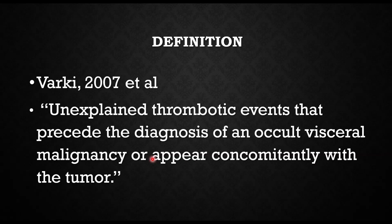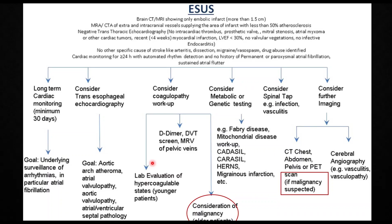How do you define stroke in a cancer or malignancy patient? Unexplained thrombotic events that precede the diagnosis of an occult visceral malignancy, or appear concomitantly with the tumor, can be termed stroke associated with carcinoma. Whenever you identify infarcts in multiple territories, you should search for an embolic source.